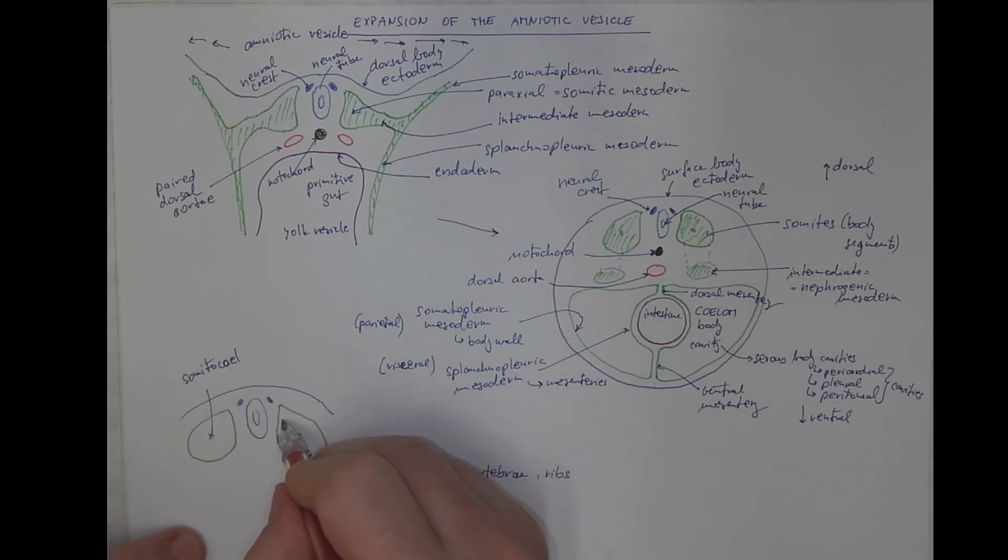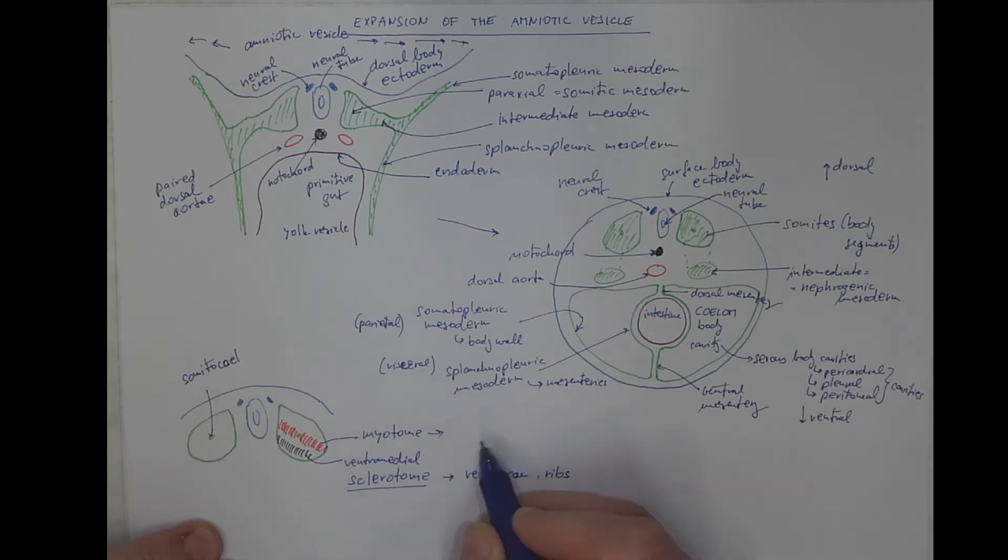The middle part, the middle population, will become muscle. In this segmented form, it's called myotome. And these cells will form the muscles of the body and of the upper and lower limbs.